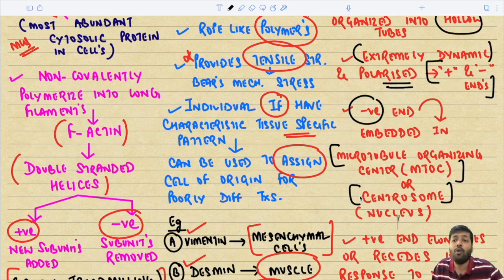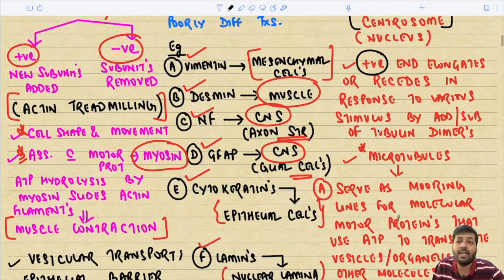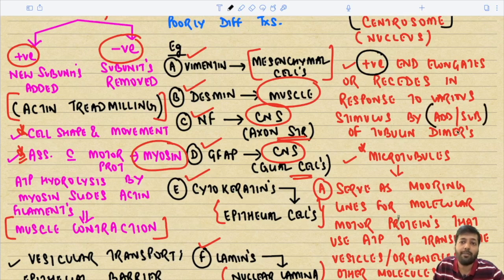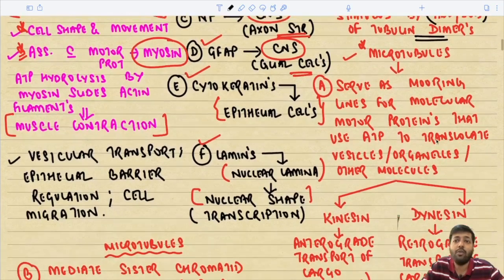The positive end of the microtubule elongates or recedes in response to various stimuli by addition or subtraction of tubulin dimers. This makes microtubules extremely dynamic structures capable of changing size rapidly.